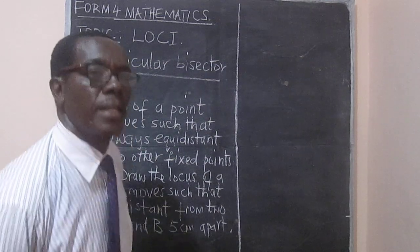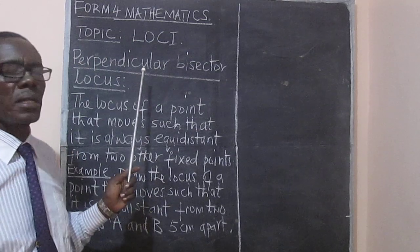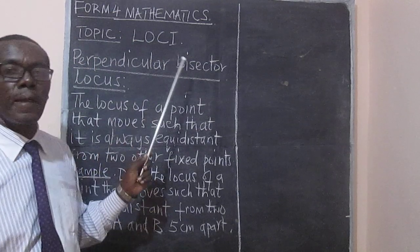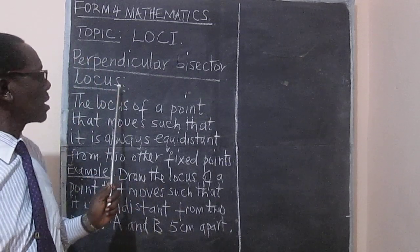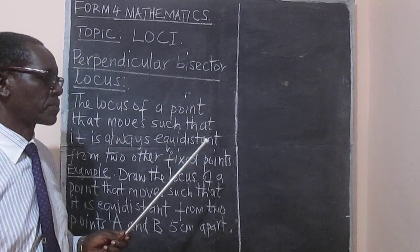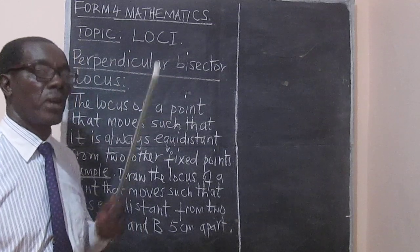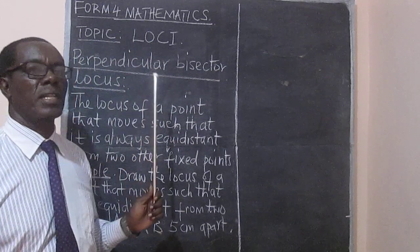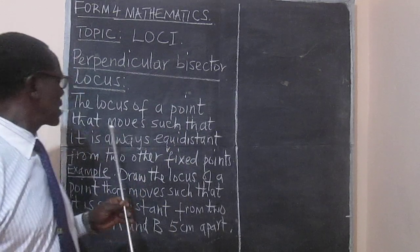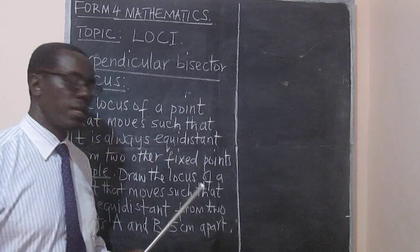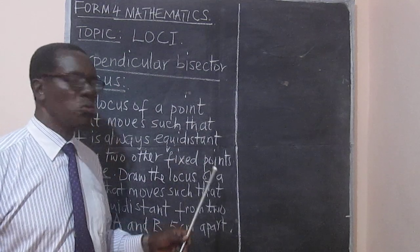Welcome to the mathematics class. We would like to continue in this topic of loci, and this time we want to look at the perpendicular bisector locus. The title itself suggests that somewhere along the line we are going to draw a perpendicular. The locus of a point that moves in such a way that it is always equidistant from two other fixed points.